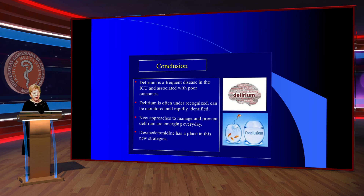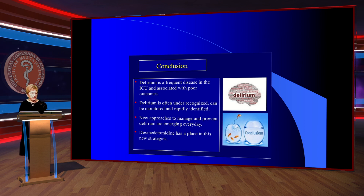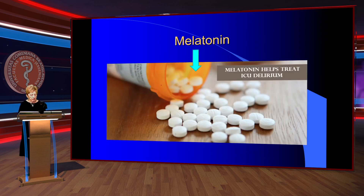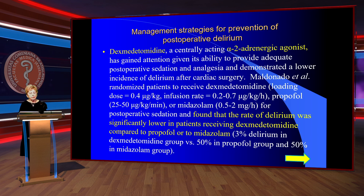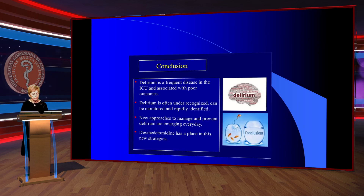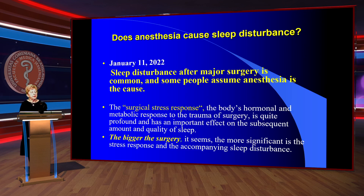In conclusion, delirium is a frequent condition in the ICU and is associated with poor outcomes. It is often under-recognized but can be monitored and rapidly identified. New approaches to manage and prevent delirium are emerging every day, including dexmedetomidine. Alpha-2-adrenergic agonists are very useful in this treatment — not only for delirium but also for post-operative cognitive dysfunction.